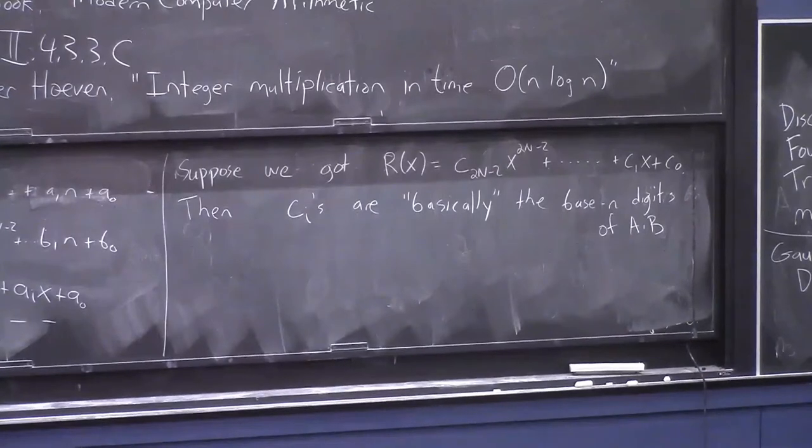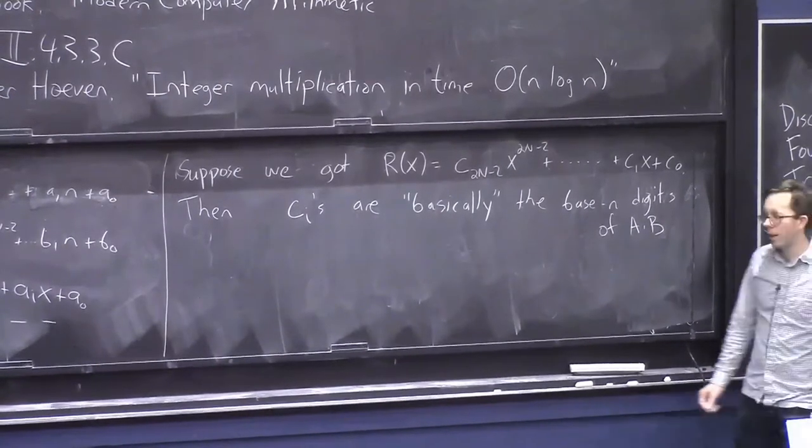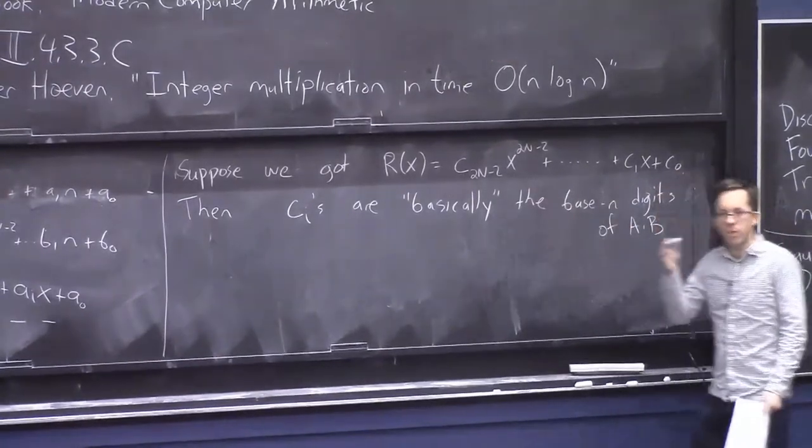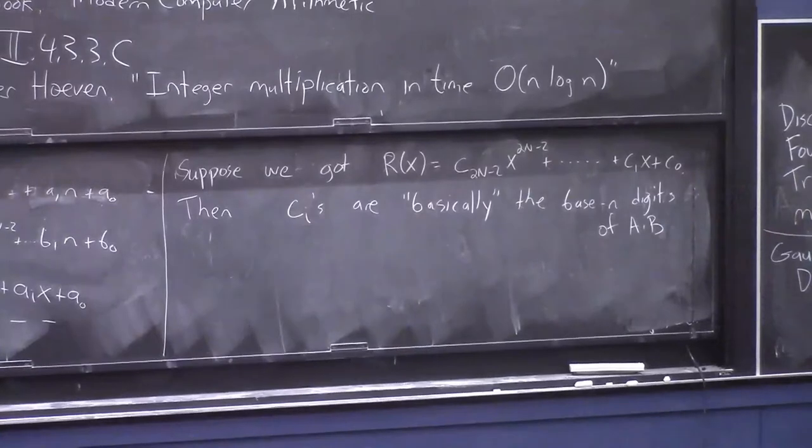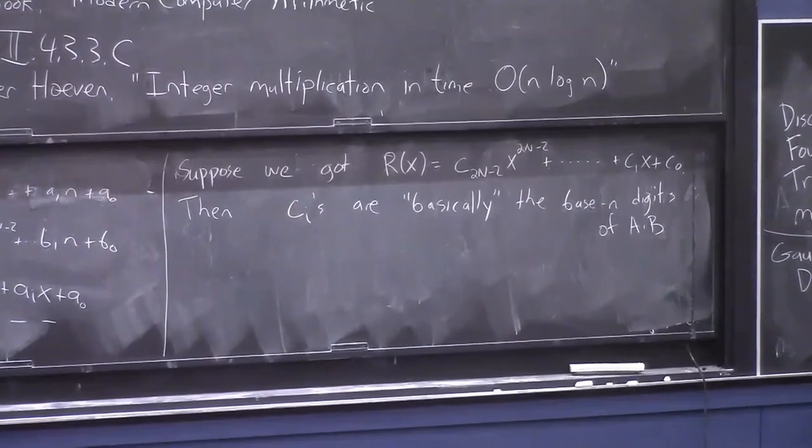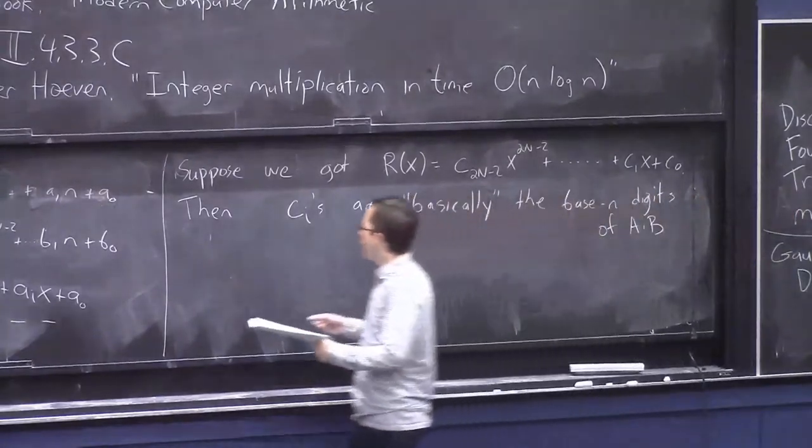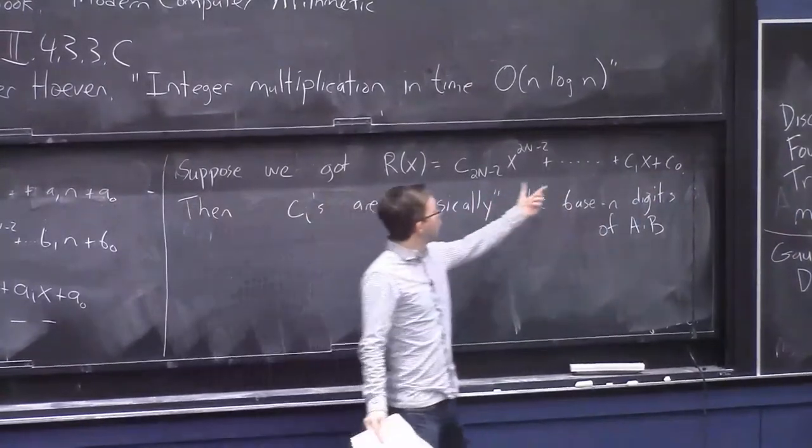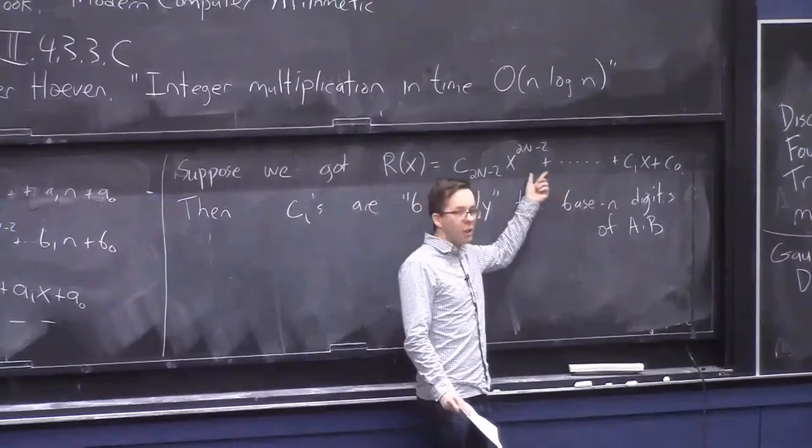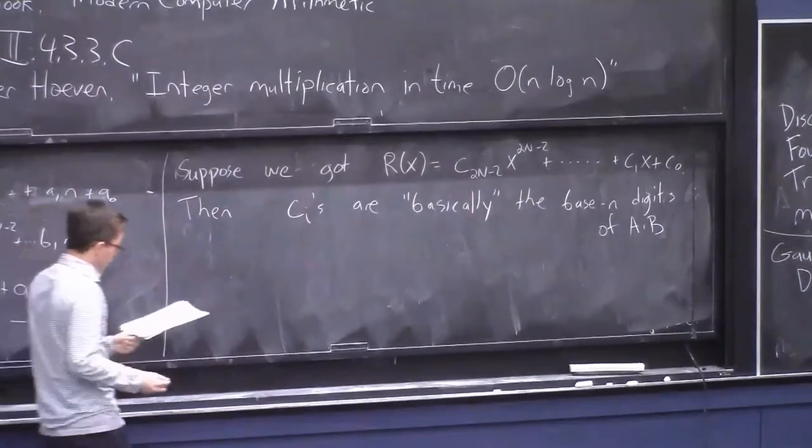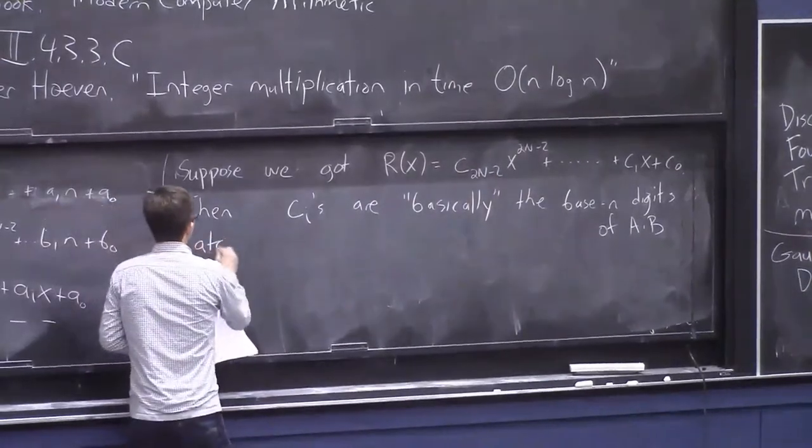There's a mild problem with this claim. What is this mild problem? Yeah. I mean, this would be exactly true if all of these coefficients were between 0 and n minus 1. But they're not. There's a catch. There's carrying, where some coefficient might be n squared, so it overflows a little bit in some sense when you're reducing it to base n, a few steps up. So there's a catch, which is carrying.